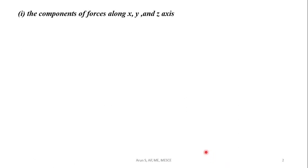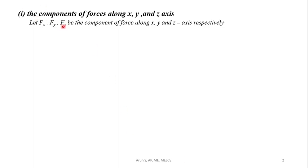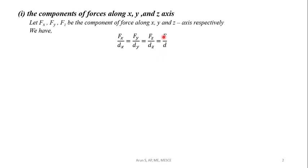The first question: what are the components of forces along x, y and z axis? Let fx, fy and fz be the components of force along x, y and z axis respectively. They are connected by the relationship: fx divided by dx equals fy divided by dy equals fz divided by dz equals F divided by d. Substituting values: fx divided by minus 1 equals fy divided by minus 9 equals fz divided by minus 1 equals 10 divided by 9.11.